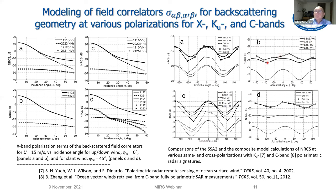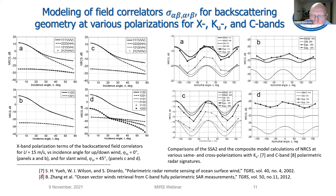Plot B shows comparisons for VH/HV polarization; the SSA2 curve is much closer to the experimental curve than the composite model. Plots C and D show analogous comparisons for C-band (5.3 cm) at 35 degrees incidence and wind speed 10 m/s, with experimental curves from Publication 8 obtained in the RADARSAT experiment. The comparisons show differences similar to those in plots A and B, more likely due to differences between the actual sea surface and the model surface spectrum.